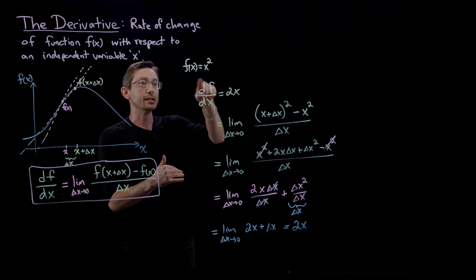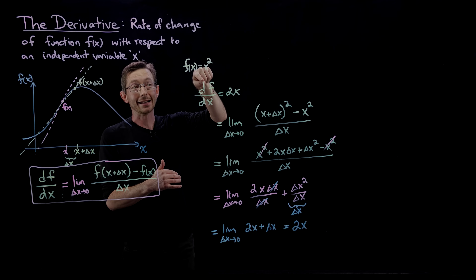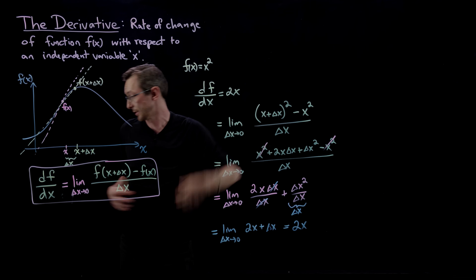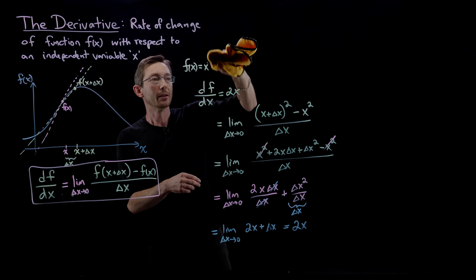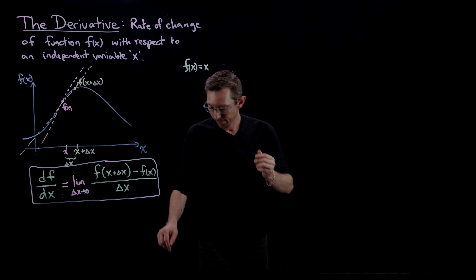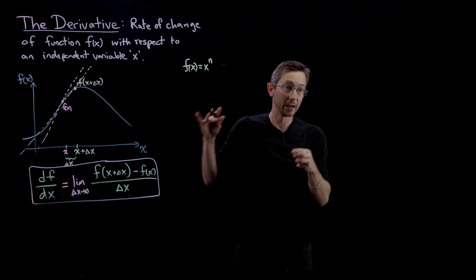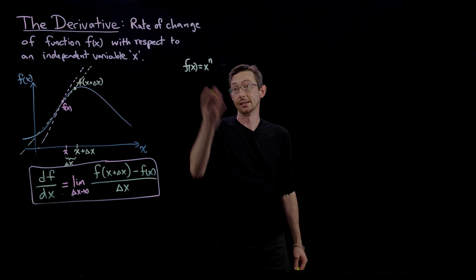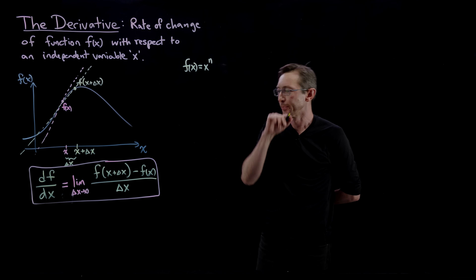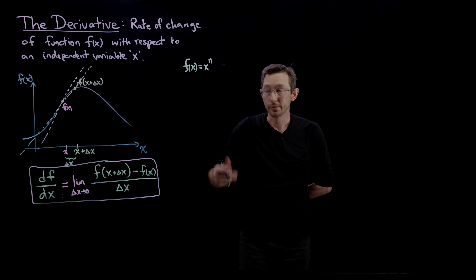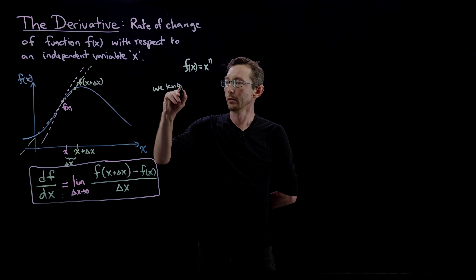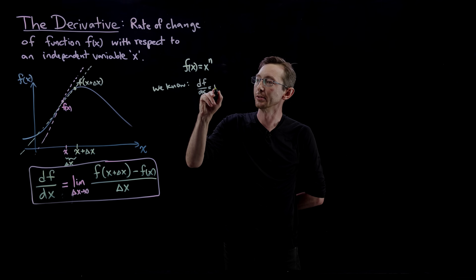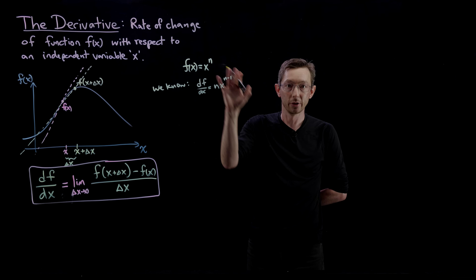Now let's do the same idea but for F of x equals x to the nth power, where n is an integer, and derive the general power law. We know from calculus that dF/dx equals n times x to the n minus 1 — that's the rule we're going to derive. I always like to point out: I've forgotten more calculus than I remember, but almost all of calculus is very intuitive and based on first principles. What I want to impart is not just formulas, but the first principles that let you re-derive the formulas when you forget them.